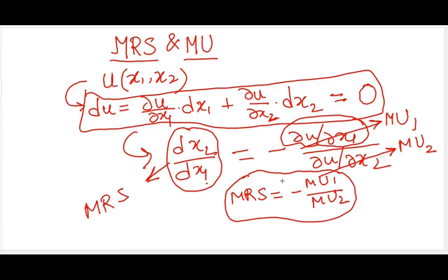So I can very well say that MRS is equal to minus MU1 upon MU2. Let's say you are not familiar with this calculus, and how do you make sense of it? We have an analogous working for the average case when we are not talking of small change but sizable change in x1 and x2.